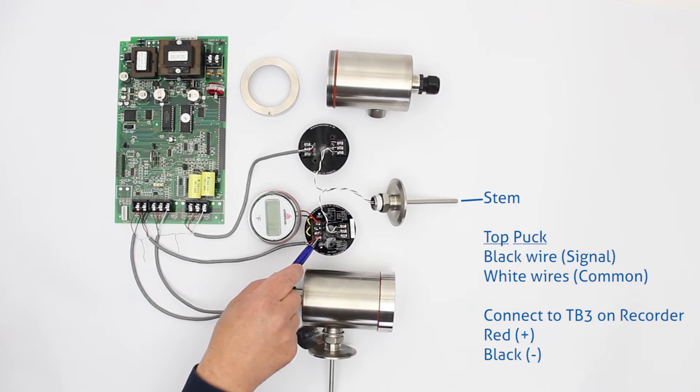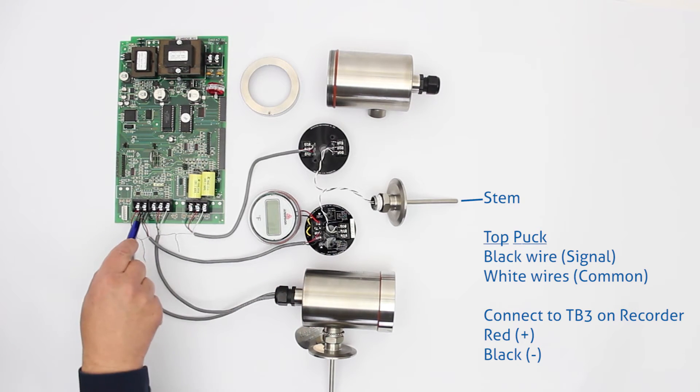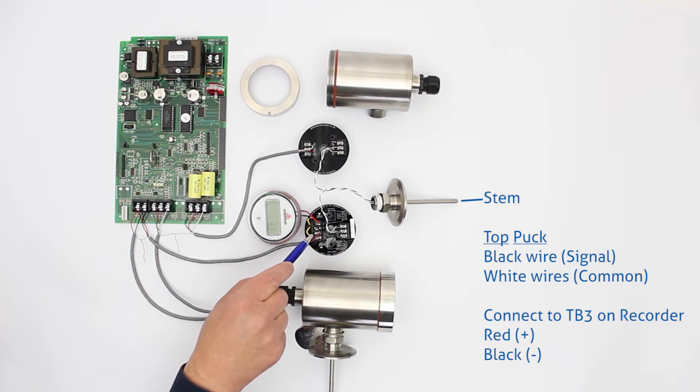So there is a wire that comes from the recorder, it's actually getting power from the recorder. On TB3 we have plus on the left and minus on the right but these two wires are providing 24 volts to power up the display on the sensor.